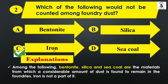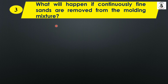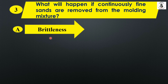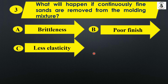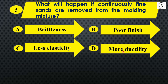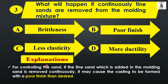Question three: What will happen if fine sands are continuously removed from the molding mixture? Option A: Brittleness, Option B: Poor finish, Option C: Less elasticity, Option D: More ductility. If fine sands added in the molding sand are removed continuously, it may cause the casting to be formed with a poor finish. The right answer is Option B: Poor finish.